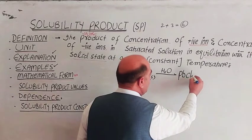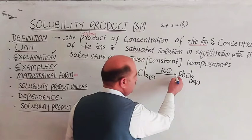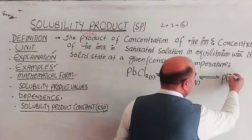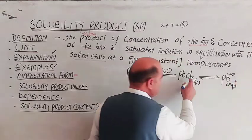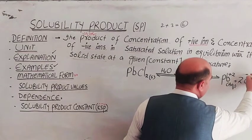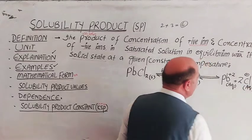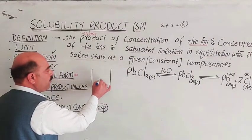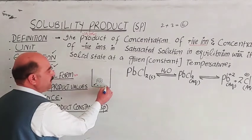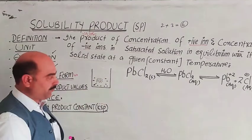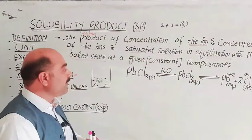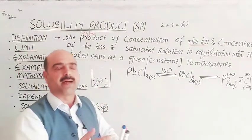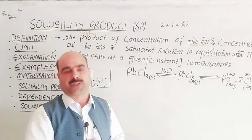PbCl₂ in aqueous solution dissociates into lead ions Pb²⁺ in solution and 2 moles of chloride ions Cl⁻. In a container, when we add solid lead chloride to water, it ionizes — lead ions and chloride ions are produced. The remaining undissolved salt stays in solid form, so we have solid state and ionic state coexisting.